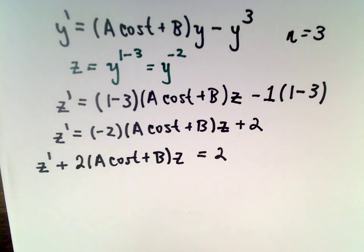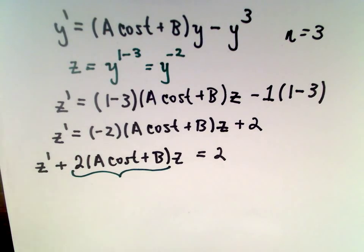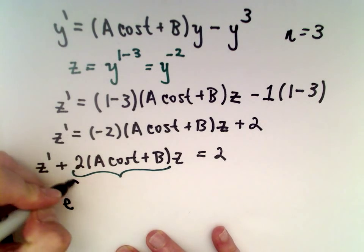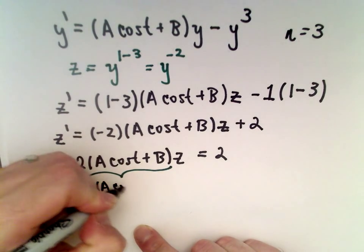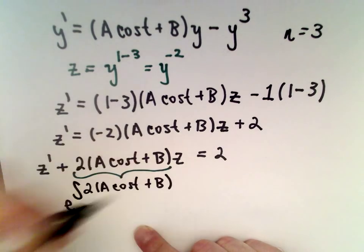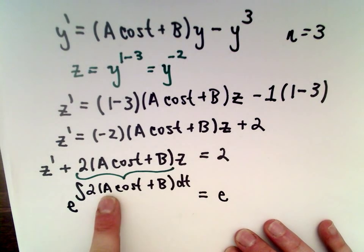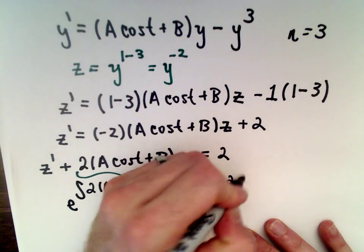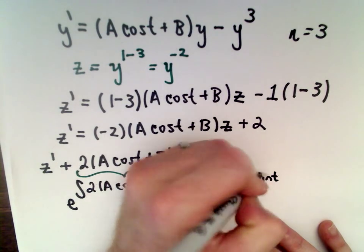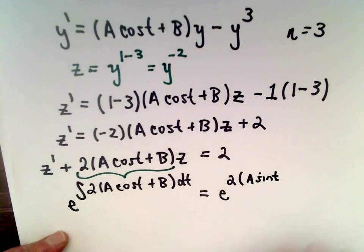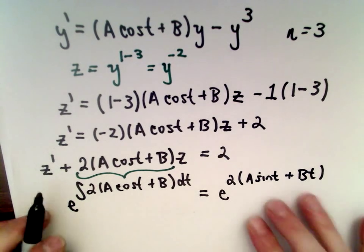We look at the coefficient in front of z and take e to the integral of that to get our integrating factor. So e raised to the integral of 2 times a cosine of t plus b, with respect to t. The integral of 2 times a cosine of t gives 2a sine of t, and the antiderivative of b gives b times t. You don't have to worry about the plus c here.